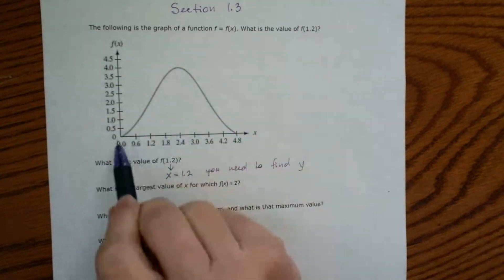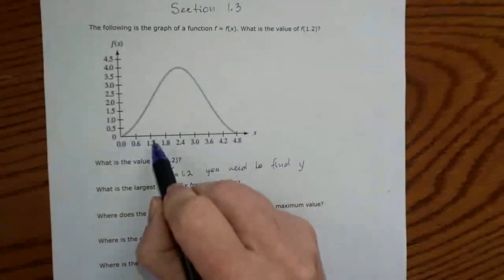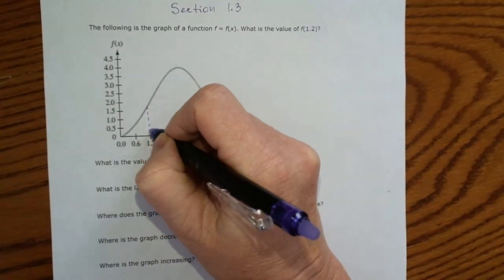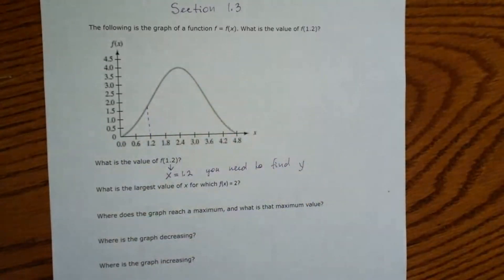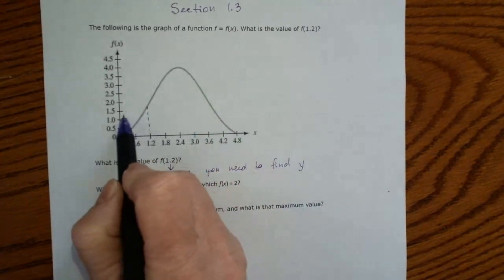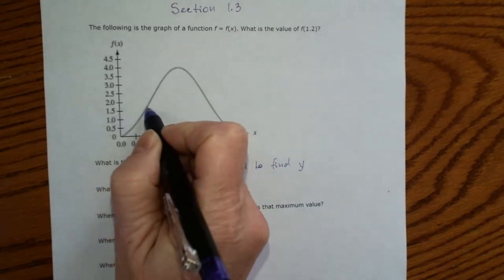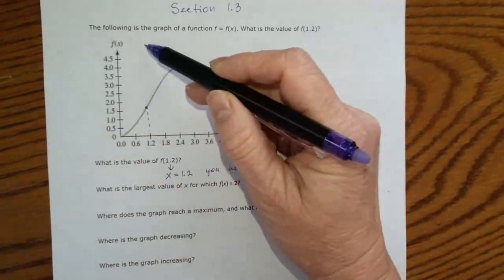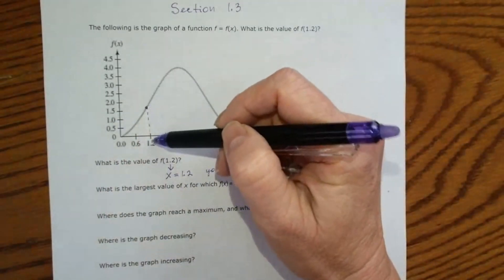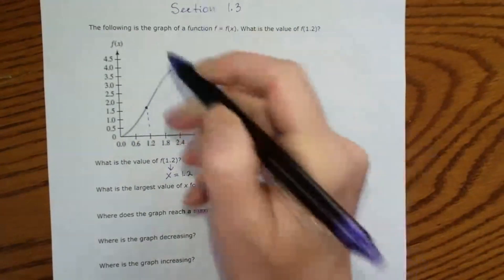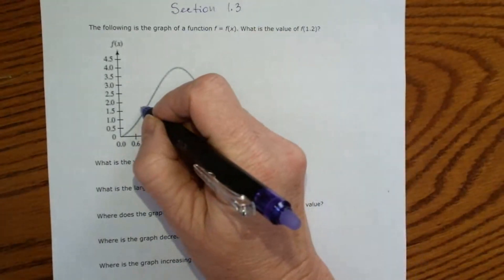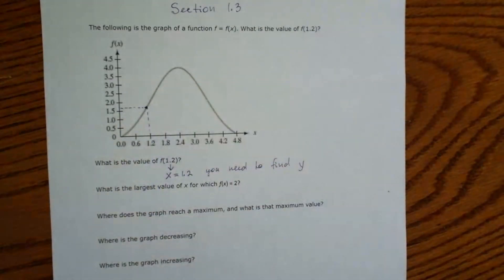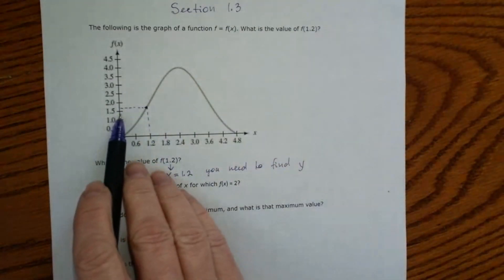So this is the x-coordinate, 1.2 is here. You will draw a vertical line and then from this point, you will look at the point where the vertical line intercepts with the graph. And you need to find the y-coordinate of this point.